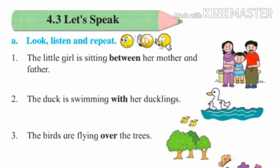You can see in the picture how that duck is swimming with her ducklings. The birds are flying over the trees. Zhaada cha urti pakshi urat ahe. Birds means pakshi, fly means udne, trees means zhaade. Over means zhaadaancha war — over means war, varti.